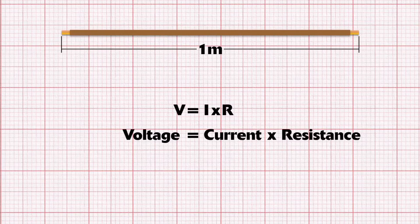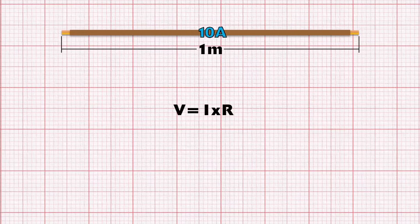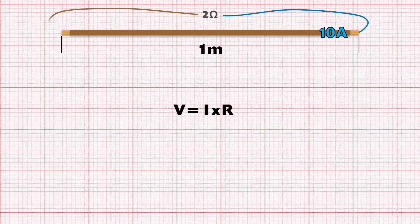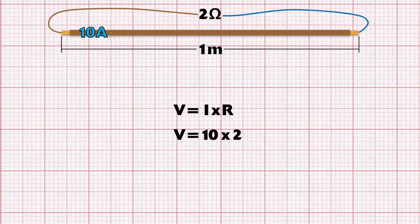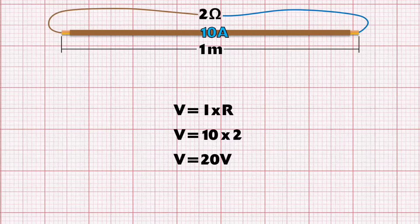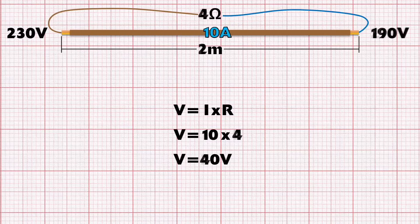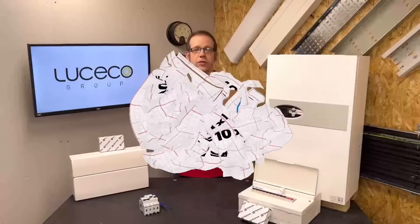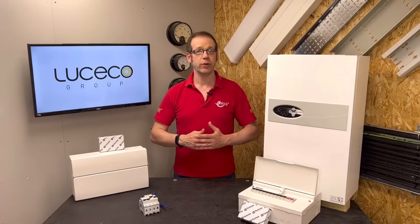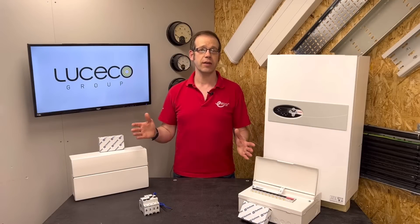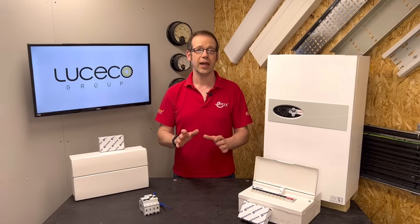Using some exaggerated numbers to illustrate the point: if we've got 10 amps running through a conductor with a resistance of 2 ohms, plugging those numbers into our calculation gives us V = 10A × 2Ω = 20 volts. So to push our 10 amps of current through this conductor, there has to be a difference of 20 volts between one end and the other. If we double the length of our conductor, we'll lose 40 volts between the start and end point. For every metre we add in length to the supply conductor, we lose 20 volts from the supply voltage. If we've got a long circuit, the voltage at the end simply can't push the current through the load and it won't operate as it should.